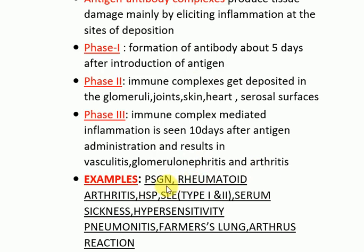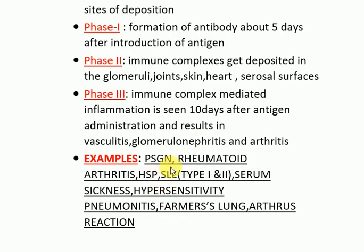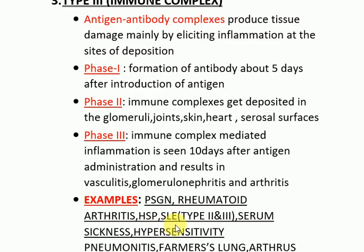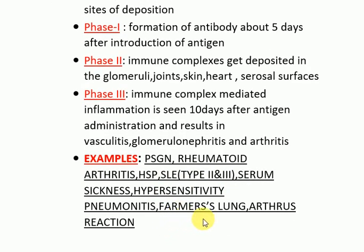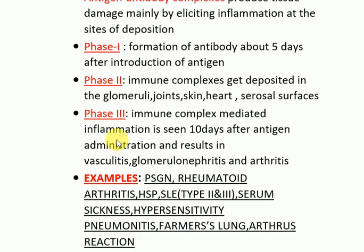Examples of Type 3 hypersensitivity include post-streptococcal glomerulonephritis, rheumatoid arthritis, HSP (Henoch-Schönlein purpura), SLE (systemic lupus erythematosus). Vasculitis is actually Type 2 as well as Type 3. Other examples include serum sickness, hypersensitivity pneumonitis, and farmer's lung — all categorized as Type 3 hypersensitivity reactions.